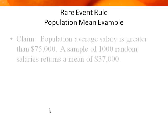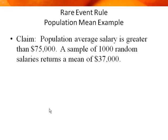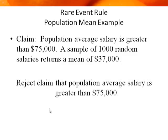Population mean example: instead of proportions, consider a claim that the population average salary is greater than $75,000. We took a sample of 1,000 random salaries and found the average was $37,000. There's a clear disconnect from the claim, so we reject it because it would be rare to get a sample like this if $75,000 were the true average. The original claim is probably wrong.